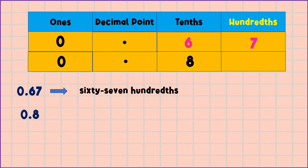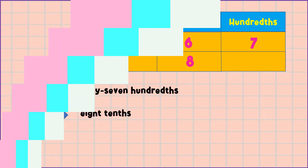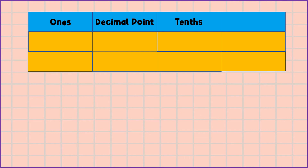How do we read this number? Yes, you are right. This is eight, then we're going to say the place value of eight, which is tenths. So this is eight tenths. Another example: